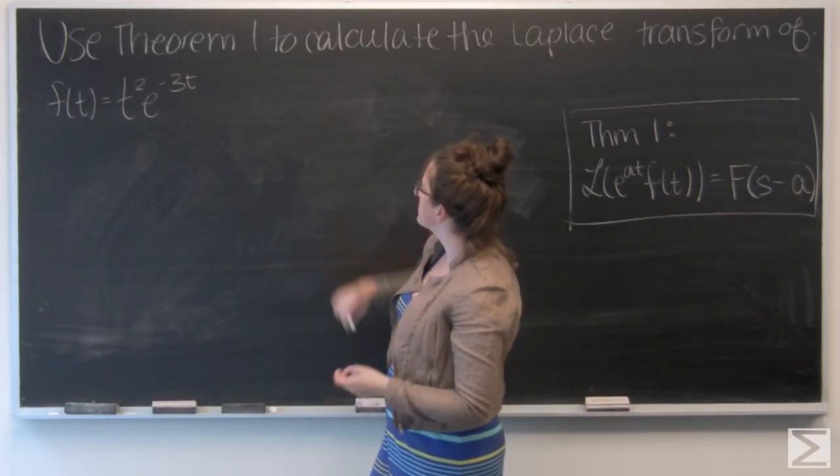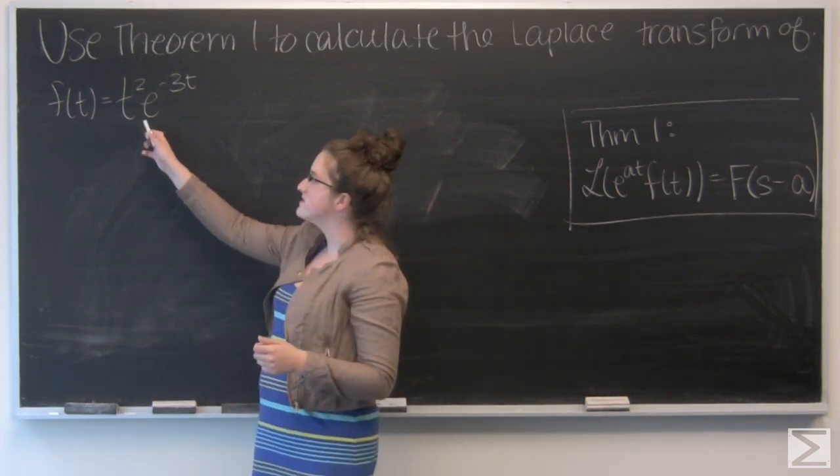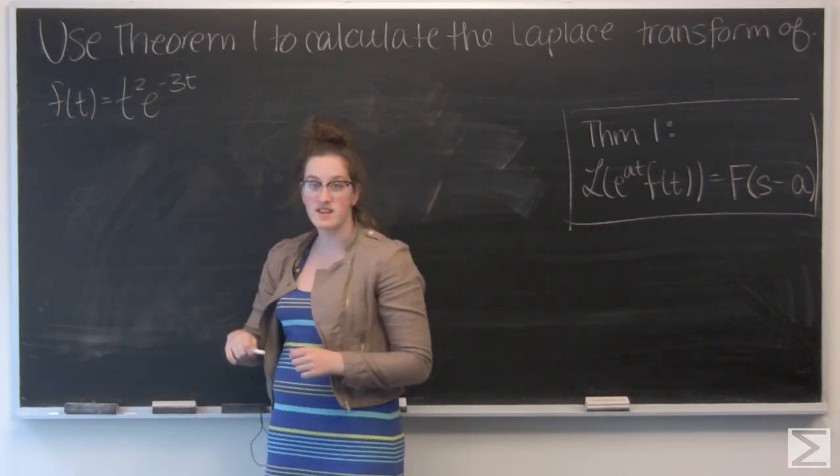This question asks us to use theorem 1 from the textbook to calculate the Laplace transform of this given function, f of t equals t squared times e to the negative 3t.